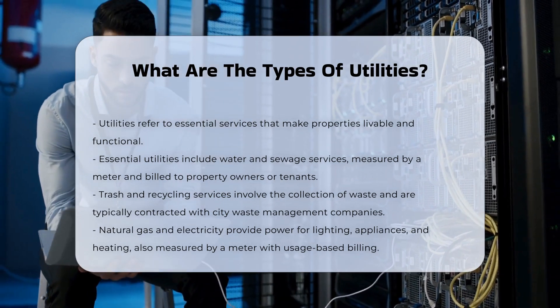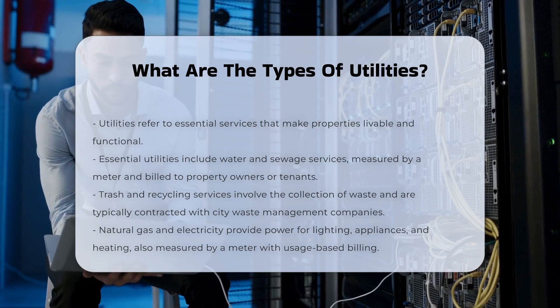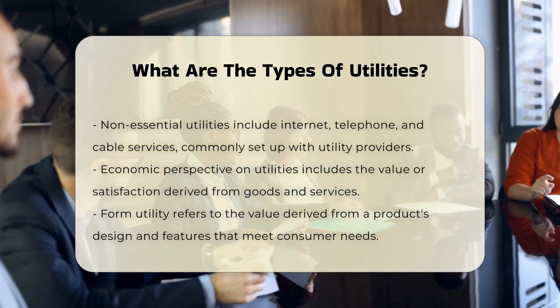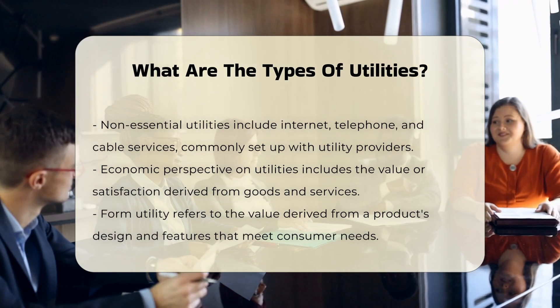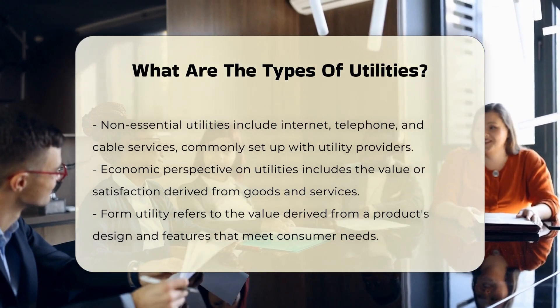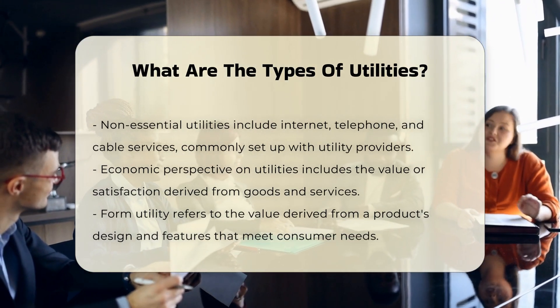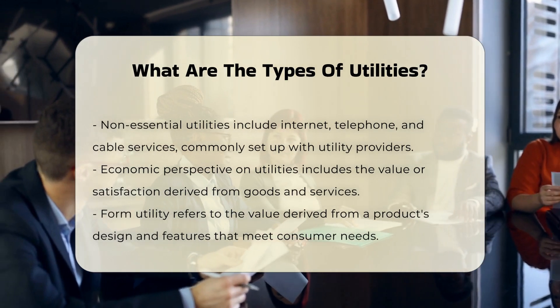Natural gas and electricity. These utilities provide power for your home, including lighting, appliance operation, and heating. The usage is measured by a meter, and you're charged based on the agreed-upon rate and usage.